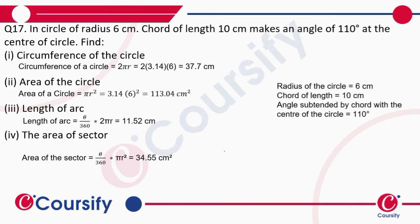In a circle of radius 6 centimeters, a chord of length 10 centimeters makes an angle of 110 degrees at the center of the circle. The radius has been given as 6 centimeters, chord length as 10 centimeters, and the angle subtended by the chord has been given as 110 degrees.